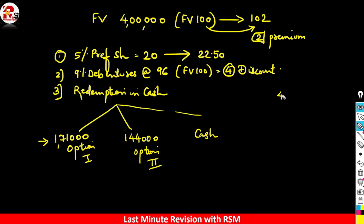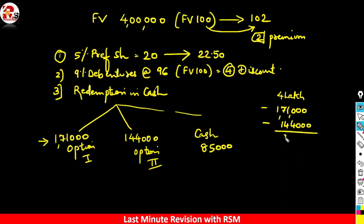The total value is 4 lakhs. Out of 4 lakhs: option 1 was accepted by 1,71,000; option 2 was accepted by 1,44,000. So for option 3, quite simply: 4,00,000 minus 1,71,000 minus 1,44,000 gives us 85,000. That is redemption in cash — 85,000 worth of debenture holders will be redeemed in cash.